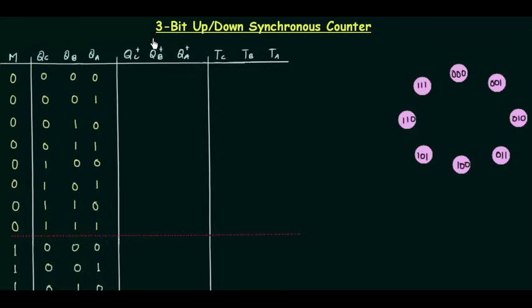In this presentation we will see how to design a 3-bit up-down synchronous counter. We have already designed the asynchronous version of this counter, where the clock was not given at the same time to all the flip-flops. But here we are going to give the same clock at the same time to all the flip-flops. The flip-flops used are A, B, C — three flip-flops, because we have to design a 3-bit counter.